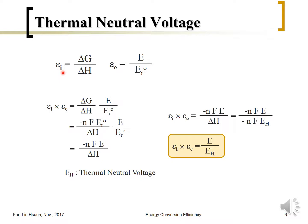If we substitute E and those two efficiencies into the combined term, then ΔG equals minus nFE_eq, and terms cancel, giving us this equation. If we assume all the chemical energy ΔH is converted to electricity, then the resulting cell voltage is the thermal neutral voltage. Dividing through, the intrinsic efficiency times the voltage efficiency equals the cell voltage divided by the thermal neutral voltage. For hydrogen fuel cells, the equilibrium cell voltage is 1.23 V and the thermal neutral voltage is 1.48 V.